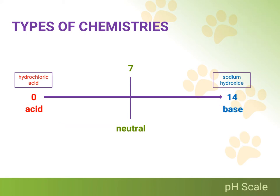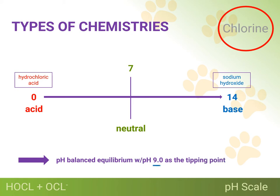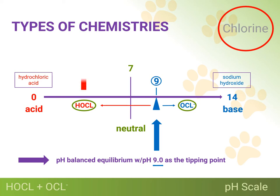Now let's take a look at the halogen chlorine for a few moments. pH plays a very important role in determining the effectiveness of chlorine products, and here's why. In chlorine solutions, two forms of free chlorine exist in a pH-balanced equilibrium, with a pH of 9.0 being the tipping point that determines which of the two forms are the dominant form of chlorine present in that solution. The two forms of chlorine are hypochlorous acid and the hypochlorite ion. What's important to note is that hypochlorous acid is 120 times more powerful as a disinfectant than the hypochlorite ion is. So obviously, the better halogen disinfectants will be those having a pH of less than 9.0.